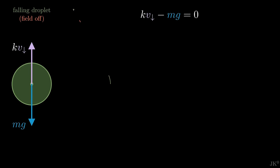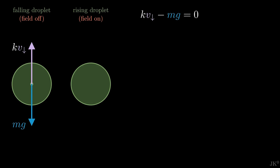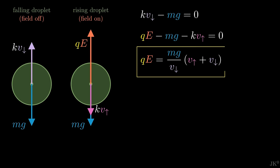During the field on phase, the voltage is adjusted so that the droplet rises at a constant speed and experiences three forces. Its weight, the electrostatic force pointed up, assuming that the charge is negative, and the drag force, which now points down because it opposes the motion and has a magnitude proportional to the rising speed denoted here by V up. The equilibrium conditions of the two phases can be combined to write QE in terms of the mass of the droplet and the two speeds.